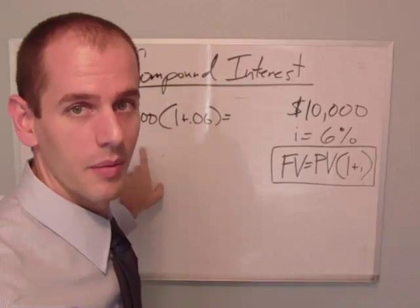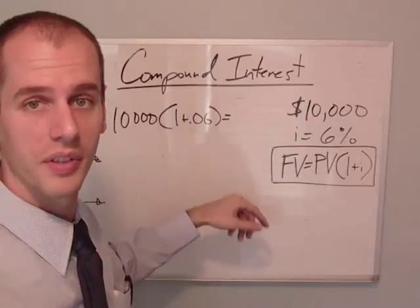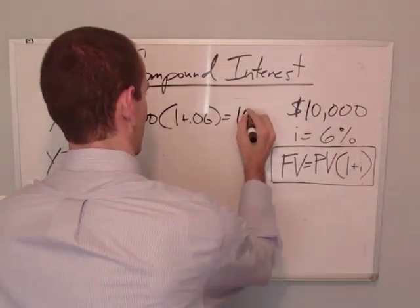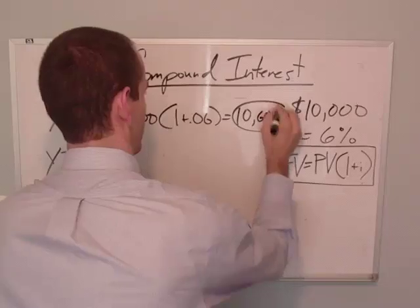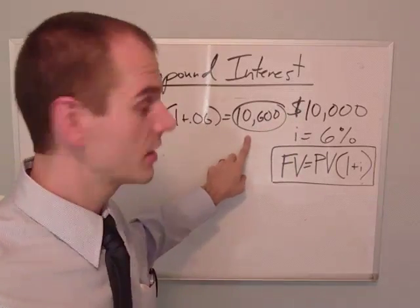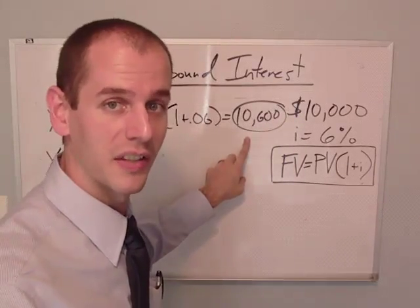So 10,000 times 1 plus 0.06 equals, you'll have $10,600 in your account at the end of year one.